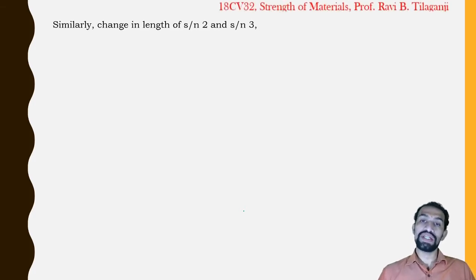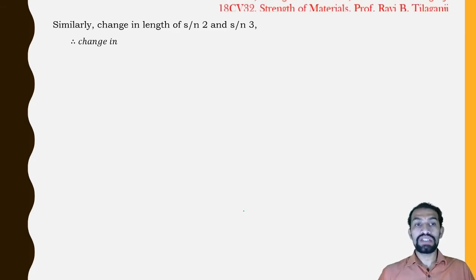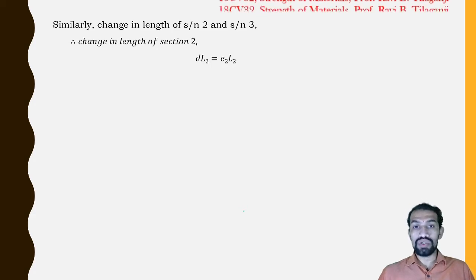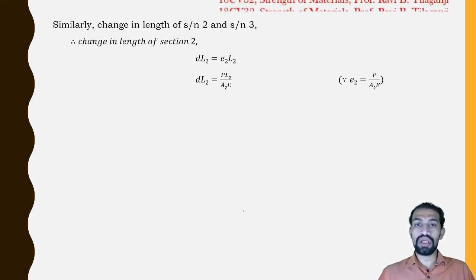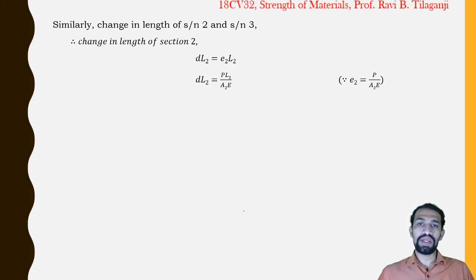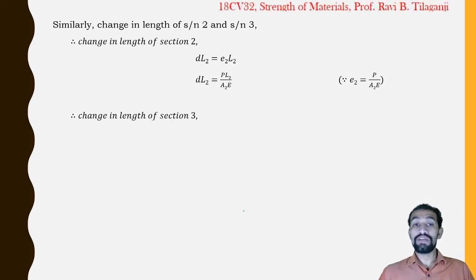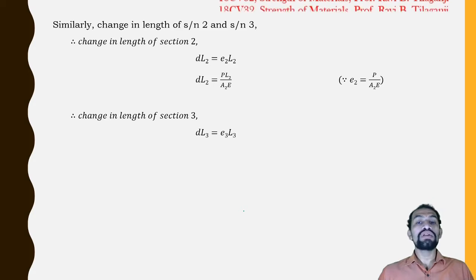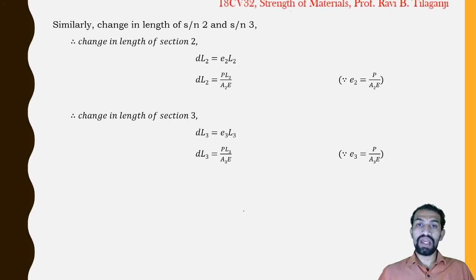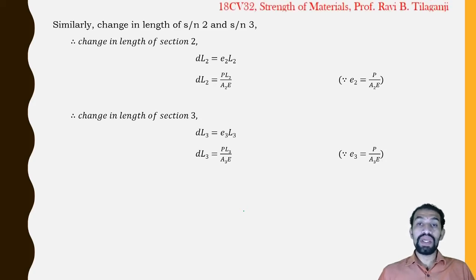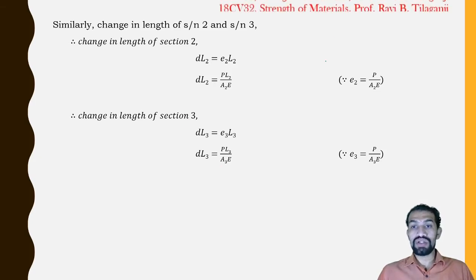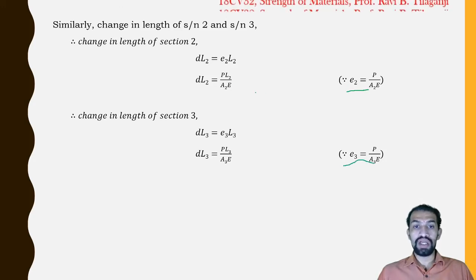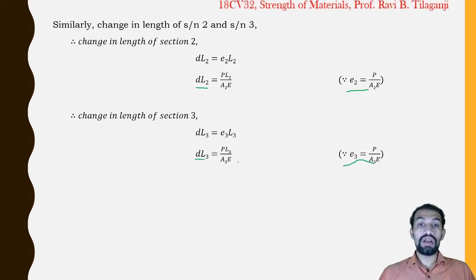Similarly, the change in length of section 2: dL2 = ε2 × L2 = P·L2/(A2·E), because ε2 = P/(A2·E). The change in length of section 3: dL3 = ε3 × L3 = P·L3/(A3·E), because ε3 = P/(A3·E).